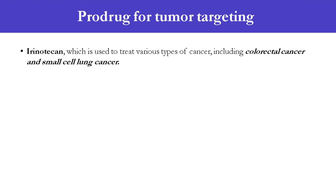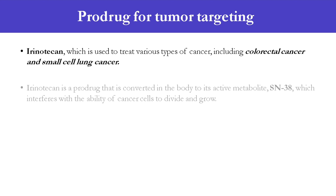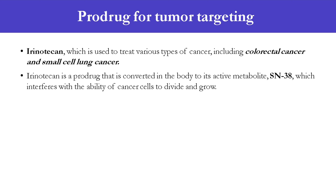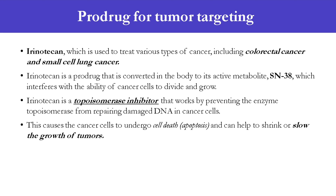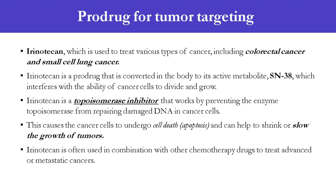A real-time example of a prodrug for tumor targeting is irinotecan, which is used to treat various types of cancer including colorectal cancer and small cell lung cancer. Irinotecan is a prodrug that is converted in the body to its active metabolite SN-38, which interferes with the ability of cancer cells to divide and grow. Irinotecan is a topoisomerase inhibitor that works by preventing the enzyme topoisomerase from repairing damaged DNA in cancer cells. This causes the cancer cells to undergo cell death (apoptosis) and can help to shrink or slow the growth of tumors. Irinotecan is often used in combination with other chemotherapy drugs to treat advanced or metastatic cancers.